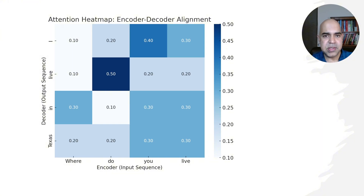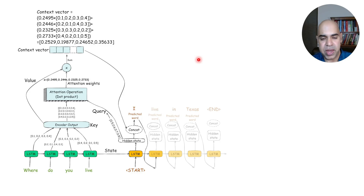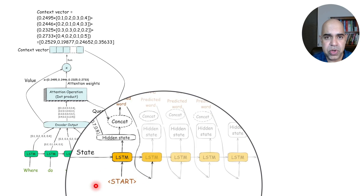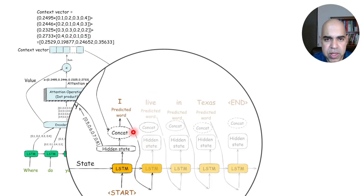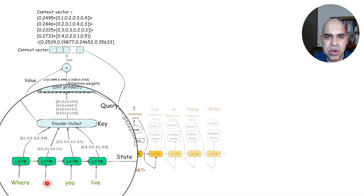Now let's see how we can incorporate this idea of attention in our LSTM-based encoder decoder architecture. Attention is generated for each prediction of the decoder, so every time the decoder LSTM recursively predicts the next word, we need to compute the attention. For a particular input token in the LSTM — in this case the token 'start' — we generate the attention, which is a vector, and we include that attention as a concatenation with the hidden state output for the word 'start'.